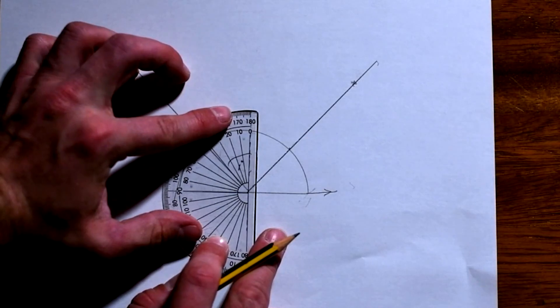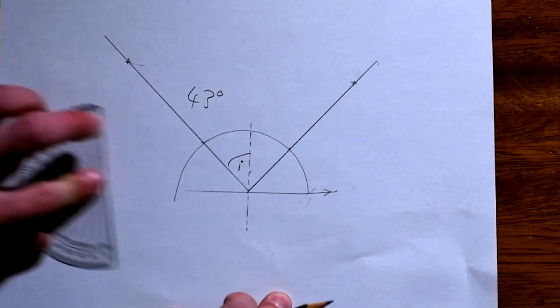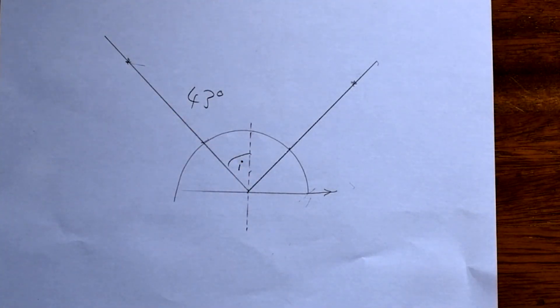And using my protractor, I can see that that is 43 degrees. When the angle of incidence is 43 degrees, that's when we achieve total internal reflection for the first time.